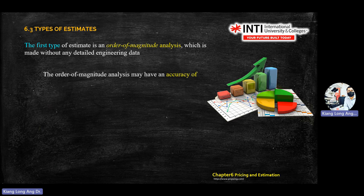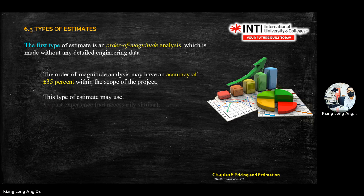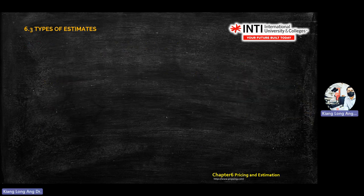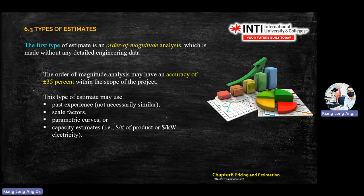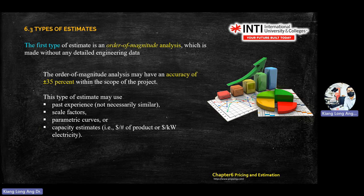The first type of estimate is order of magnitude analysis, made without detailed engineering data. If you use order of magnitude analysis, the accuracy will be around plus or minus 35%. These are typical examples for order of magnitude analysis: past experience, scale factor, parametric curve, or capacity estimates using statistics — you estimate based on previous data.